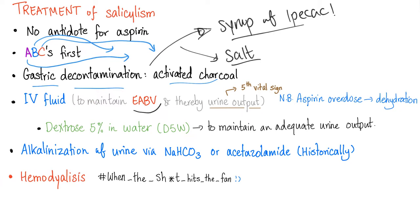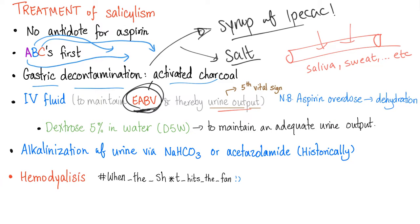Give IV fluids to maintain effective arterial blood volume — this maintains urine output, since urine comes from the blood, as do all secretions. Aspirin overdose can lead to dehydration, so give IV fluids. Dextrose 5% in water is great because it maintains volume and provides dextrose, helpful since these patients can suffer from hypoglycemia. If they are not hypoglycemic, normal saline is also appropriate.